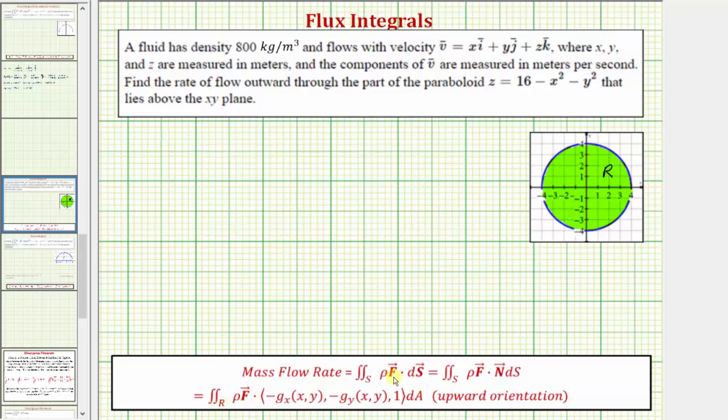Using our formula, rho is equal to 800, and notice here the vector field F must be written as a function of x and y because differential A is equal to dx dy or dy dx. The vector field F, which is really the vector field V, has an x component of x, a y component of y, but the z component is z, but we must substitute 16 minus x squared minus y squared for z.